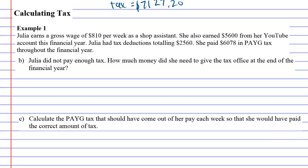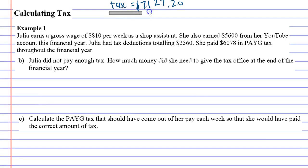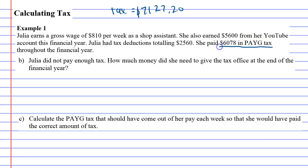We're carrying on with example one, going from question A that we did before. We figured out that the tax Julia had to pay was $7,127.20. Now in question B, it says Julia did not pay enough tax. How do we know that? You'll notice here that it says her PAYG tax — the amount of tax she paid over the year — was $6,078, when really she should have paid just over seven grand. So she's underpaid her tax.